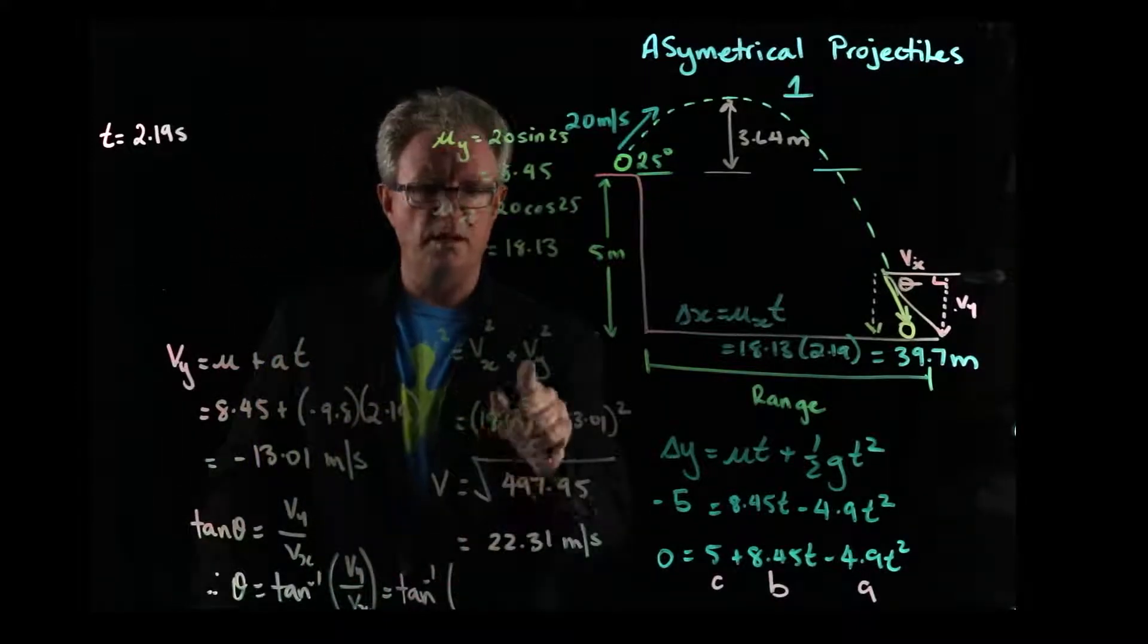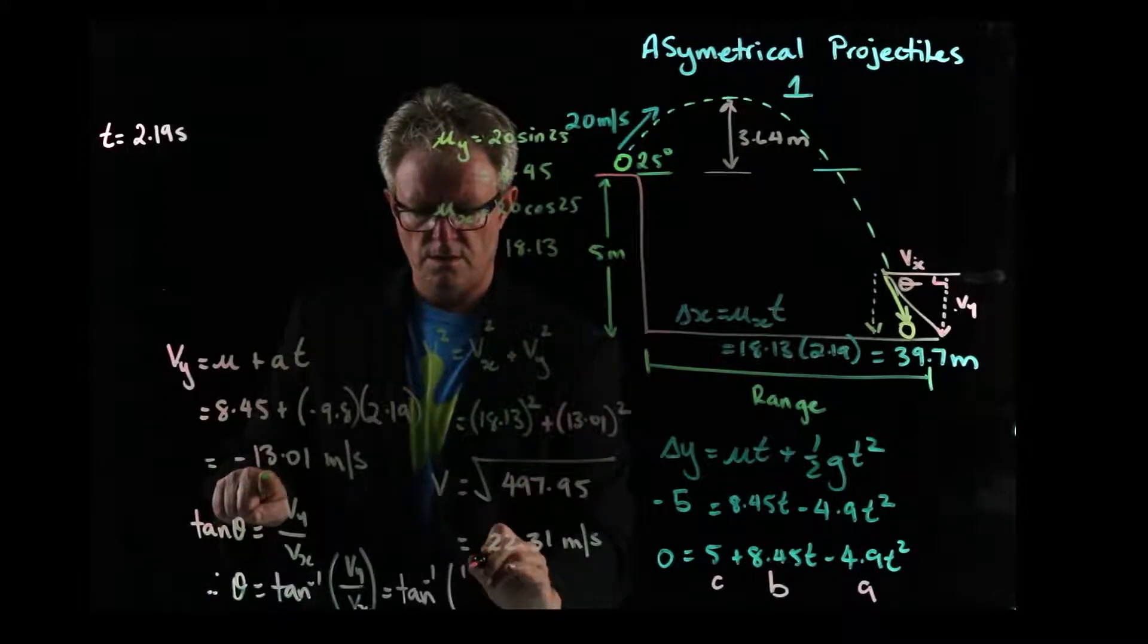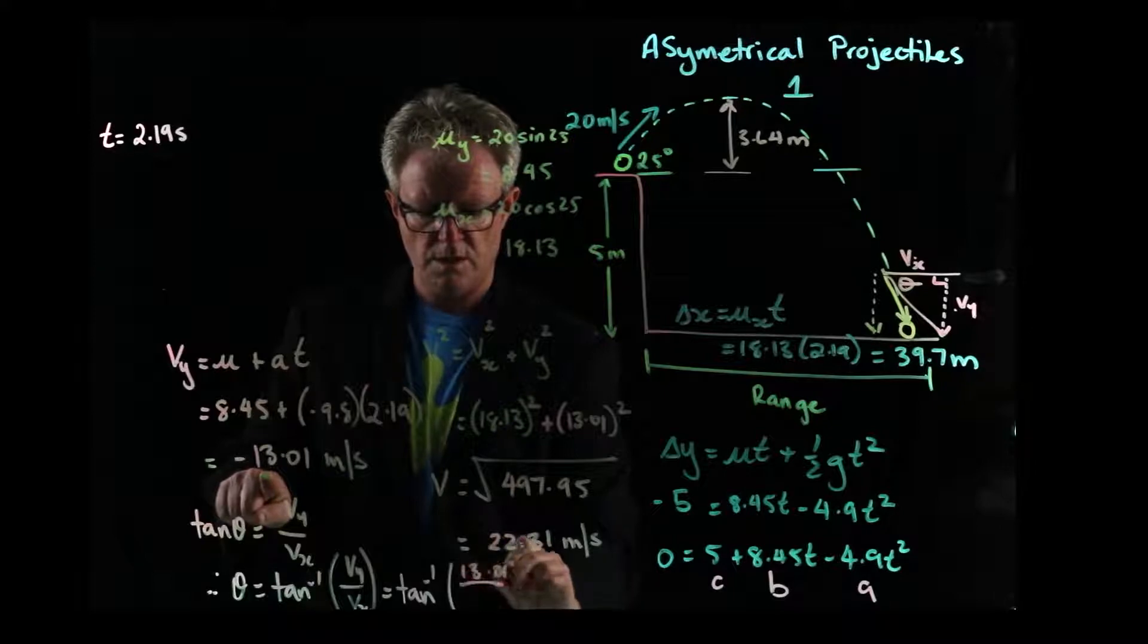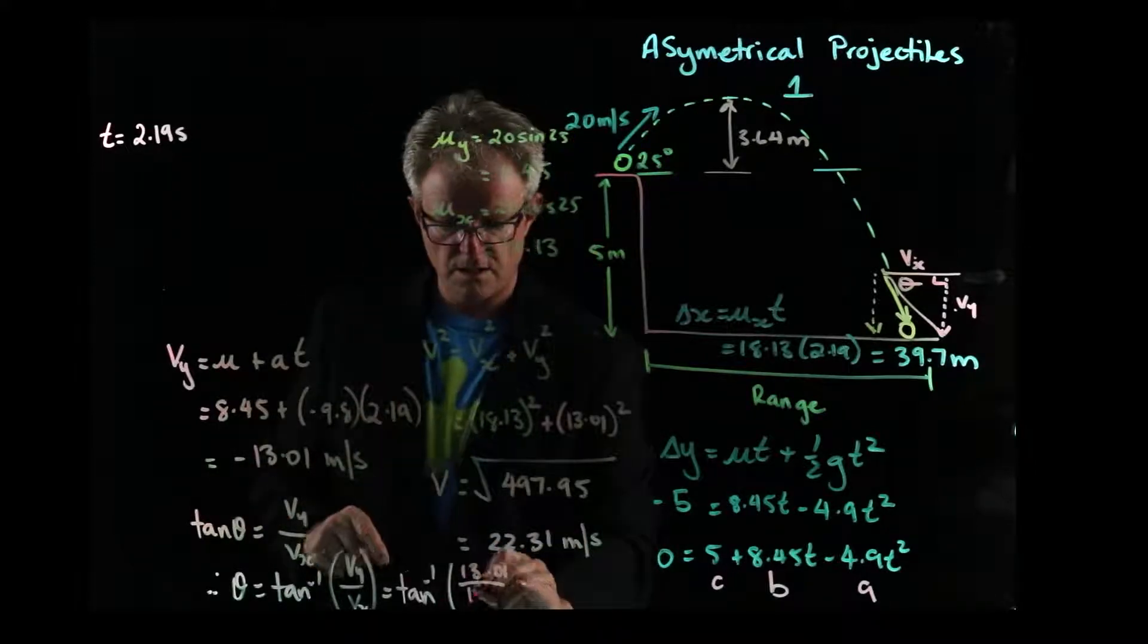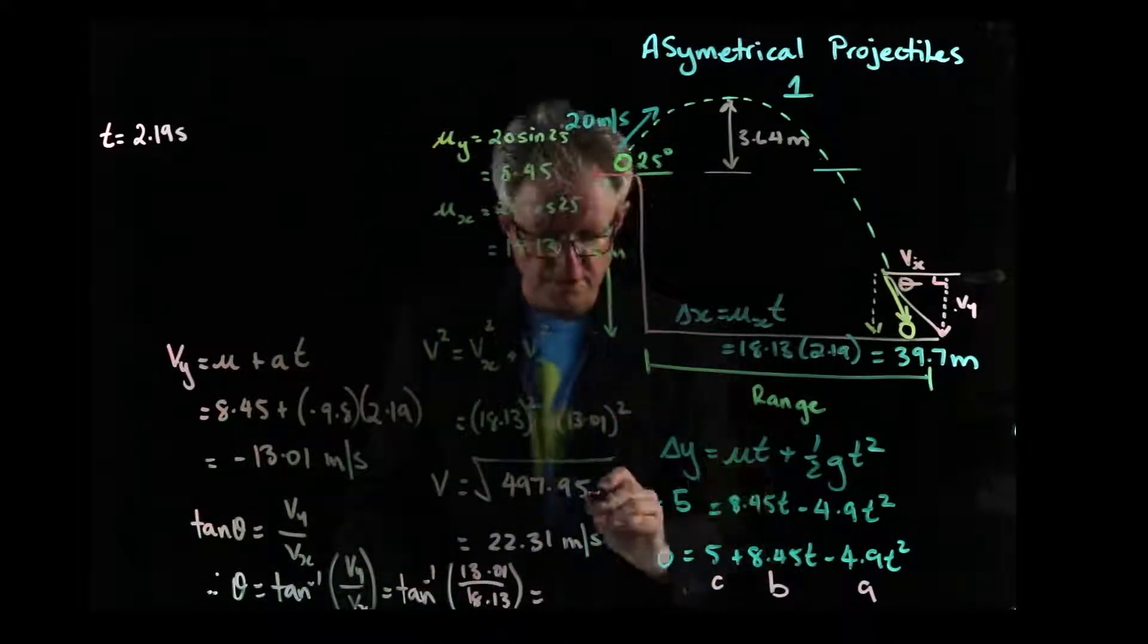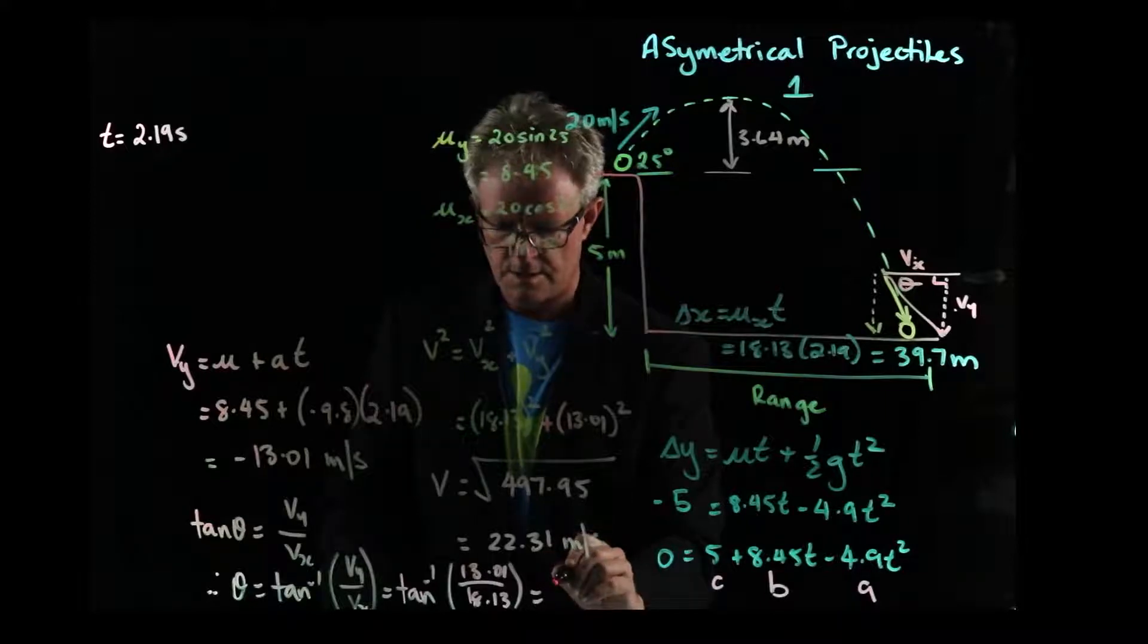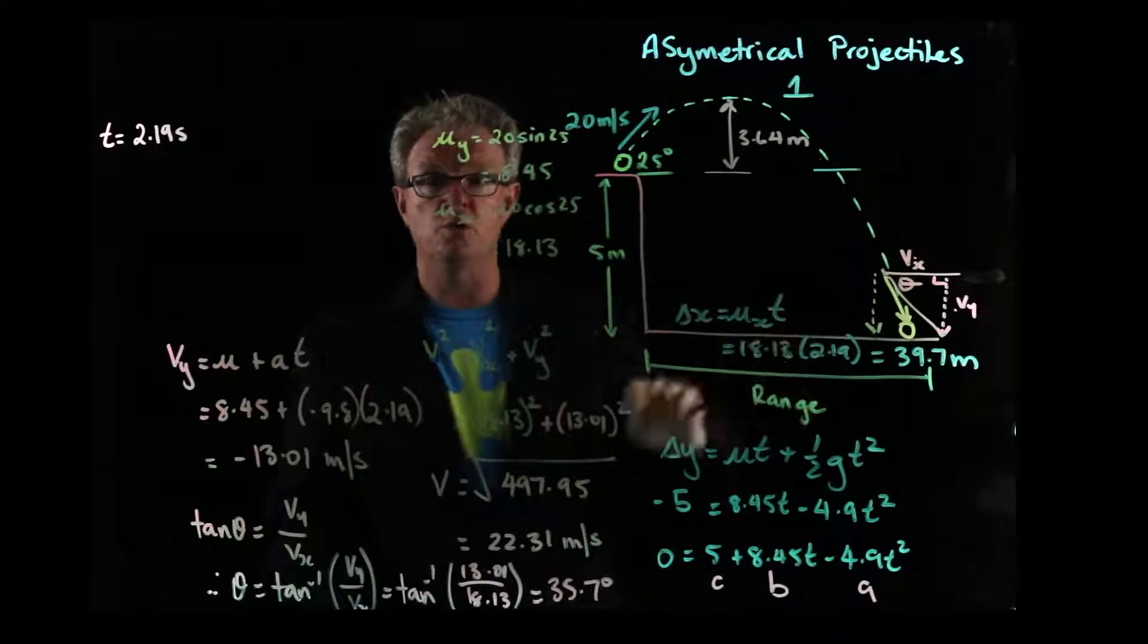And vy, we said is 13.01. Vx, we said didn't change, 18.13. And when we do that, it turns out to be 35.7 degrees below the horizontal.